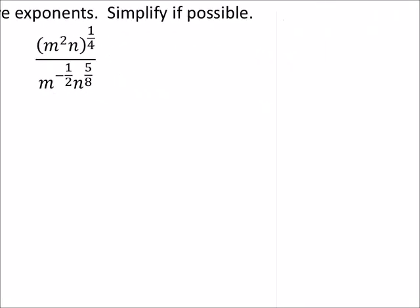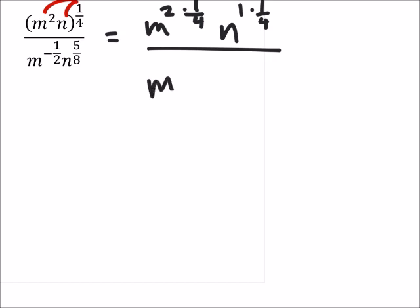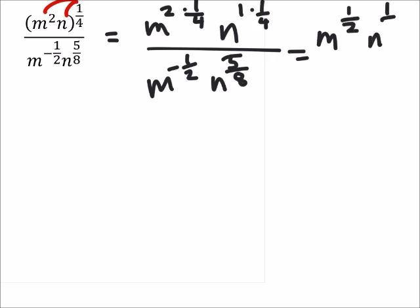Alright, we're going to need more space for this one. So, applying our exponent rules, the first thing I'm going to have to do is distribute that 1 fourth. So then I would have m to the power of 2 times 1 fourth, and then n to the power of 1 times 1 fourth. And all this is over m to the power of negative 1 half, n to the power of 5 eighths. So this gives me m to the power of 1 half — 2 times 1 fourth — n to the power of 1 fourth, all over m to the power of negative 1 half, n to the power of 5 eighths.